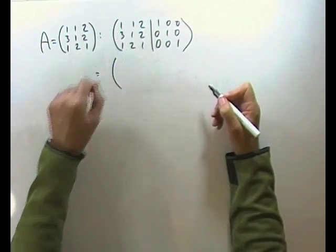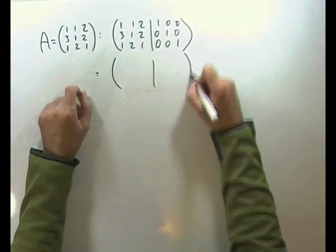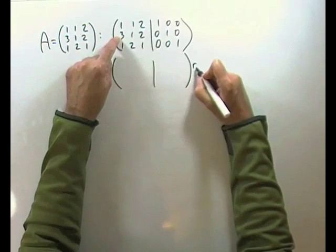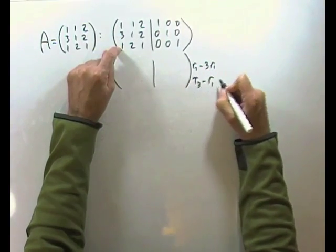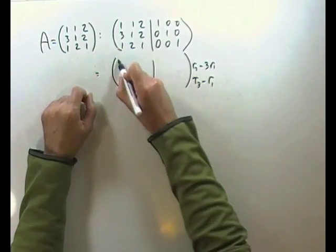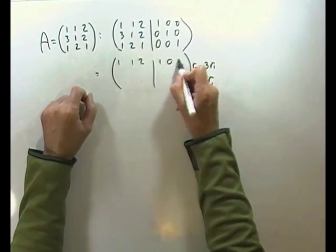So the first step would be, get both of these down to zeros. Well in order to do that, I'd want row two, take away three lots of row one, and row three, take away just row one. So that would give me, leave the first row alone. So that's just going to stay the way it is.